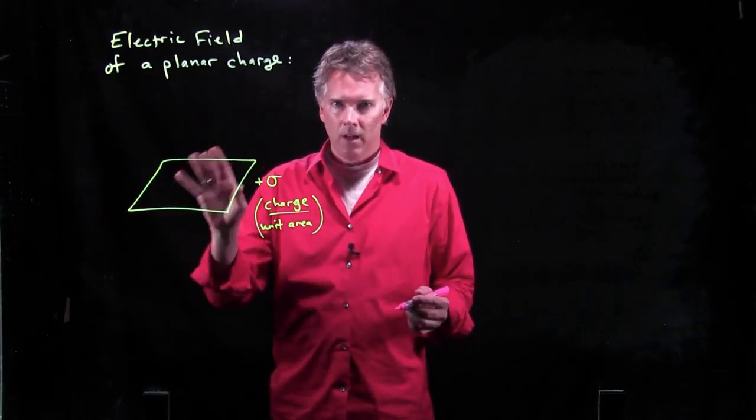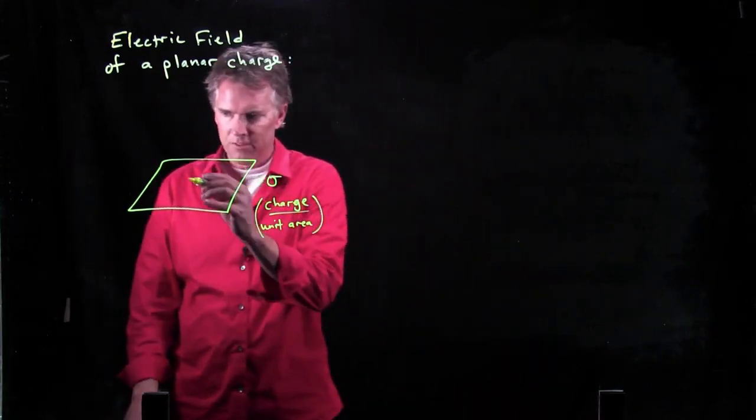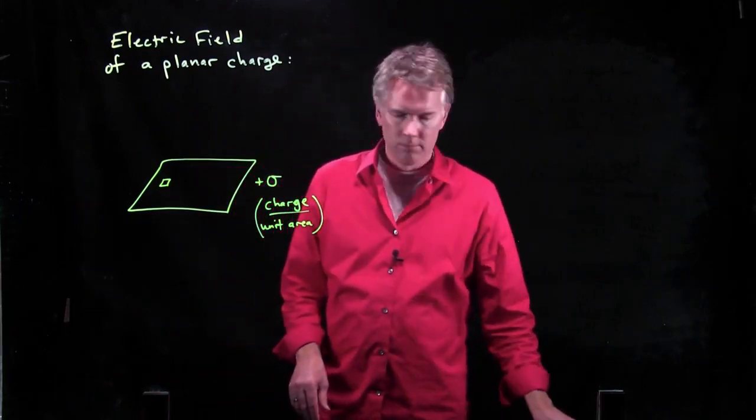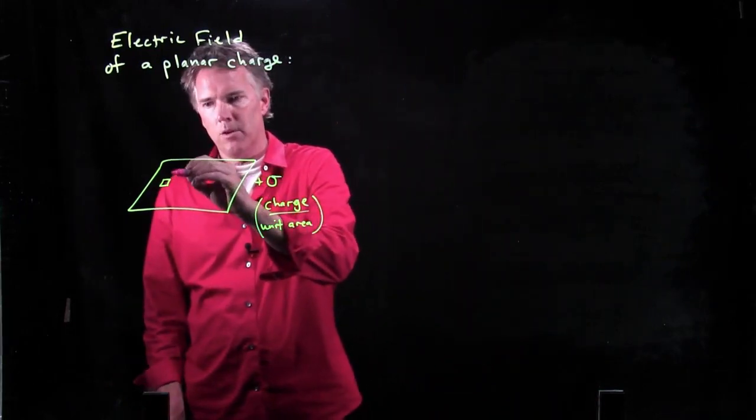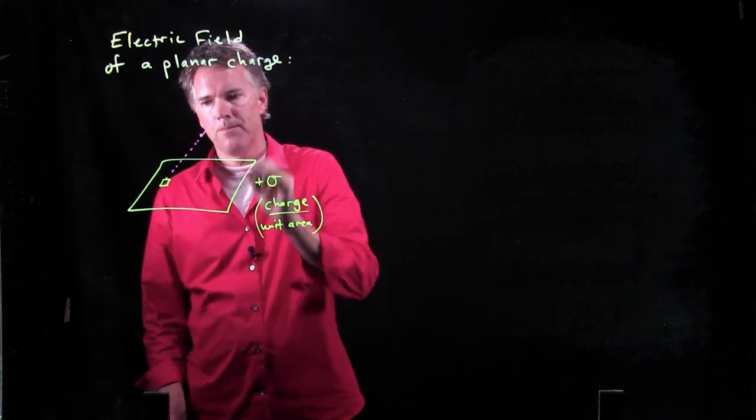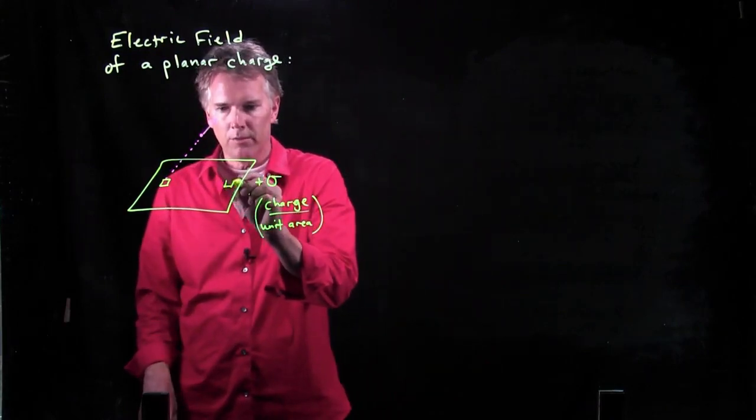Here we're going to consider the plane also infinite. So if I think about one little section of this plane, that is going to make an electric field up here that looks like that. But I can grab another little section over here, and that's going to make an electric field that looks like that.